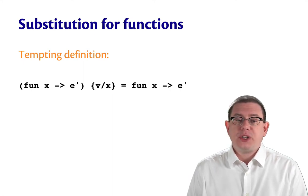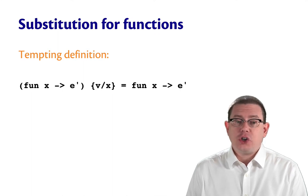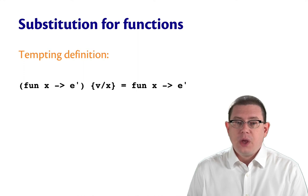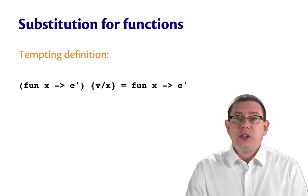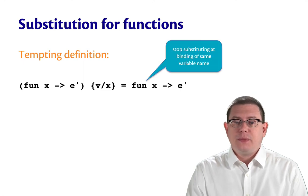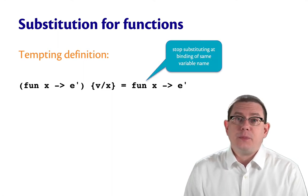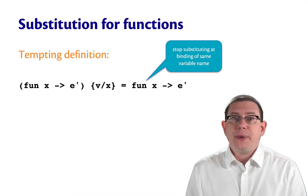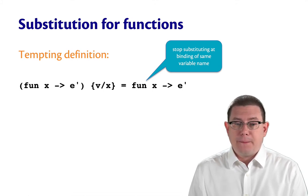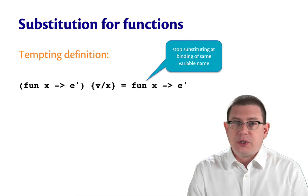So how do we define substitution for an anonymous function? Suppose we're substituting v for x inside of the function fun x arrow e prime. Well, we could let that be fun x arrow e prime, that is, stop doing the substitution. This is something we discovered before when we looked at definitions of substitution. We should stop substituting at a binding of the same variable name. So since x already is the argument of this function, we're not going to recurse inside of it to do the substitution.